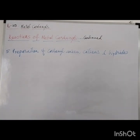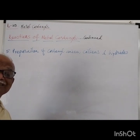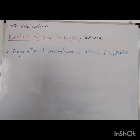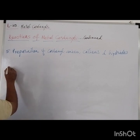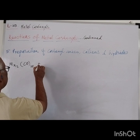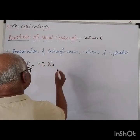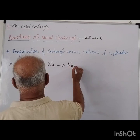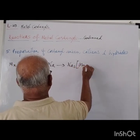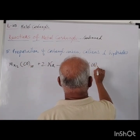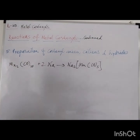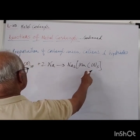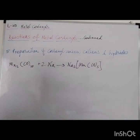With simple reducing agents such as sodium metal, we can prepare mono or dianionic species. For example, Mn₂(CO)₁₀ plus twice Na gives Na₂[Mn₂(CO)₄] — a dianionic species. Another example: Co₂(CO)₈ plus twice Na gives Na₂[Co₂(CO)₄] — here Co is cobalt and CO is carbon monoxide.